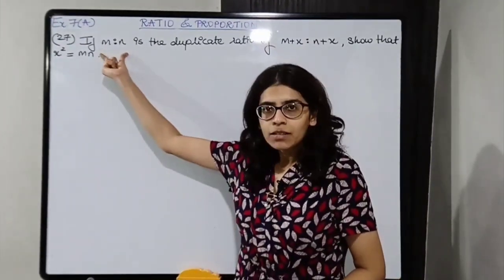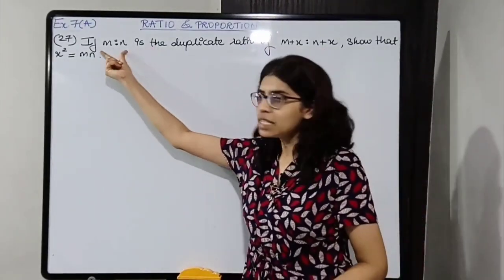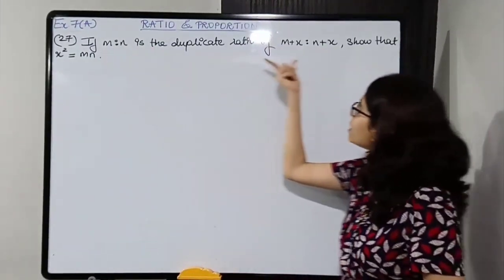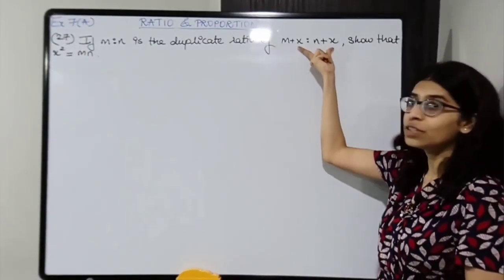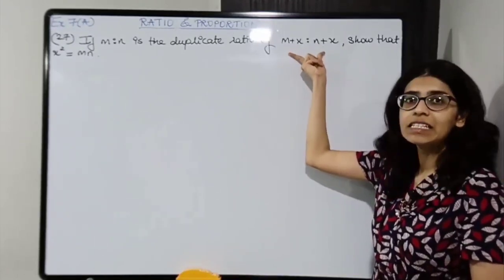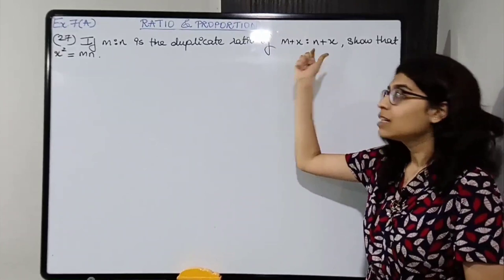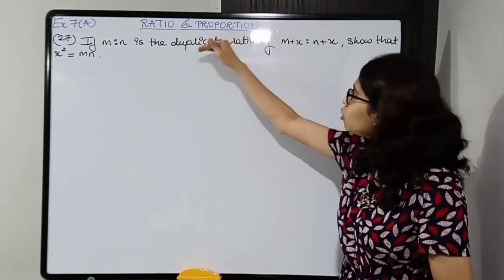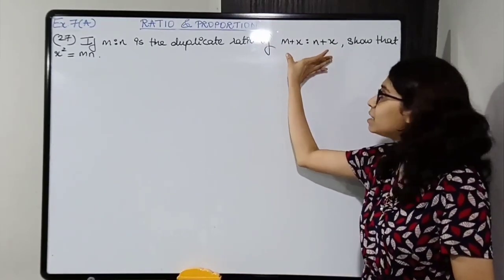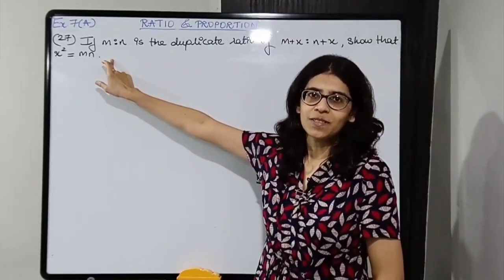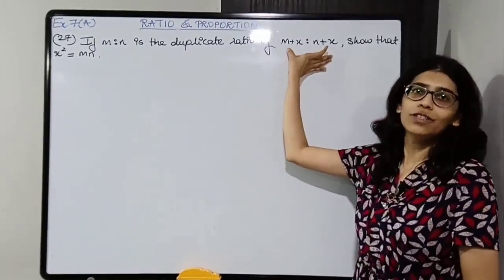m is to n is the duplicate ratio of m plus x to n plus x. So this is equal to the square of the ratio m plus x to n plus x. You have to duplicate this ratio — the one written after 'duplicate ratio of' is the one you square, not the other one. So this is equal to the square of this ratio.